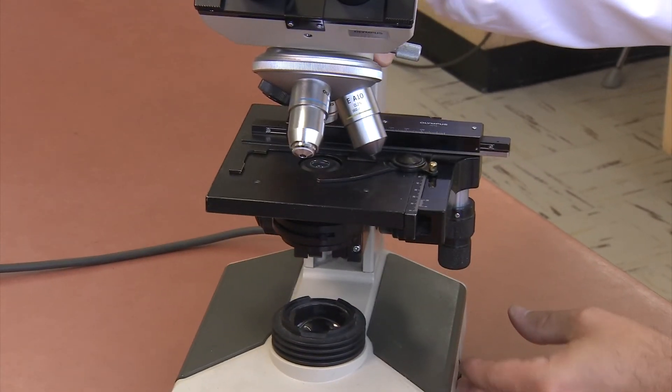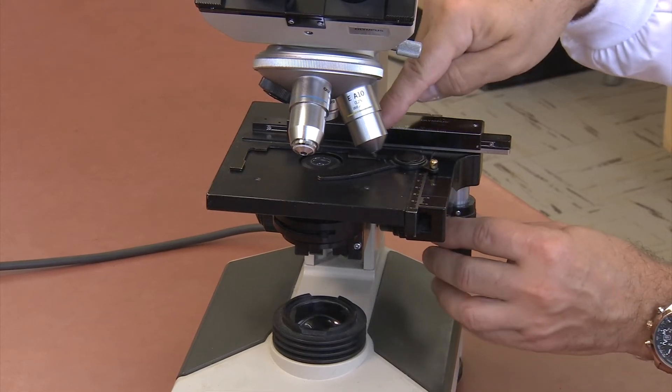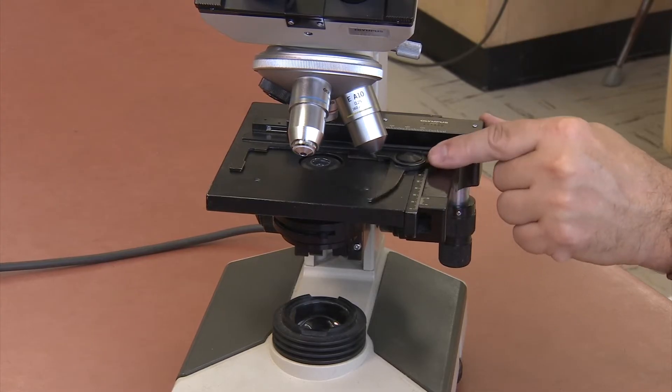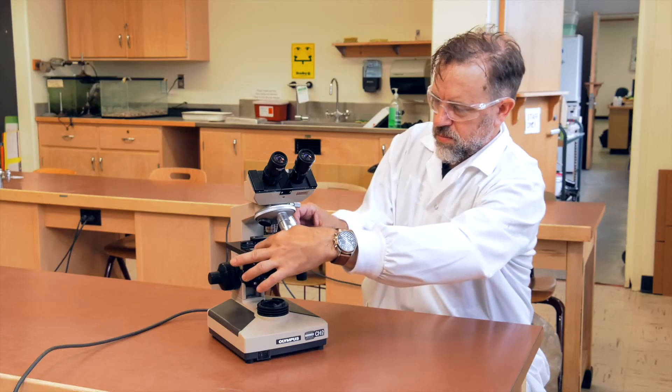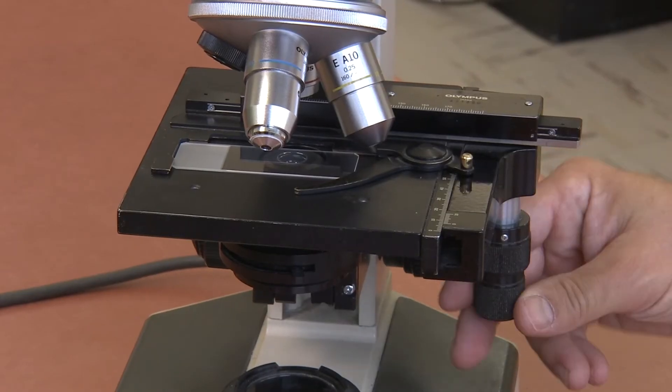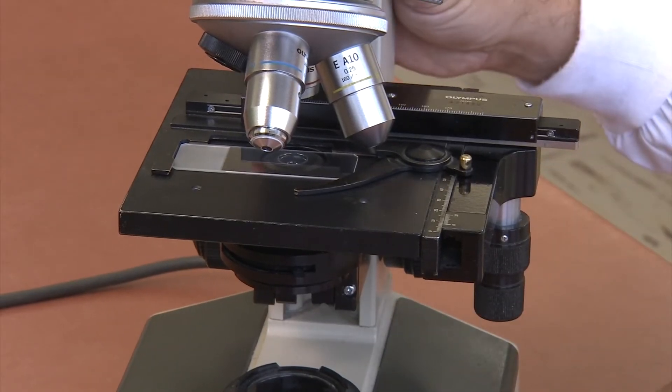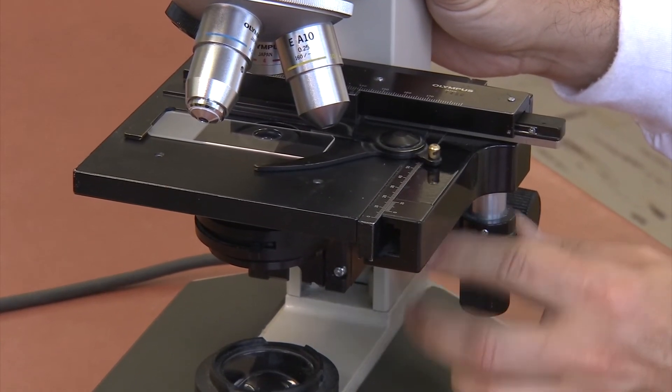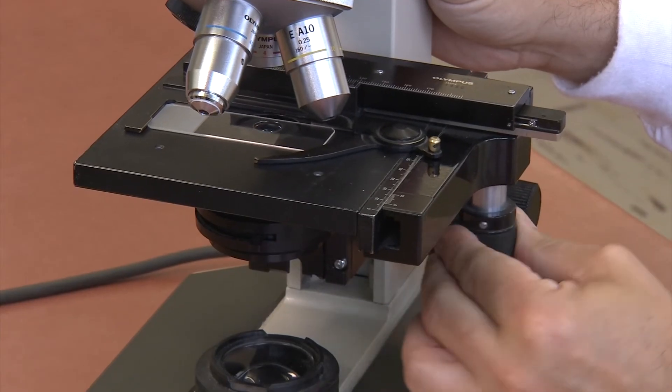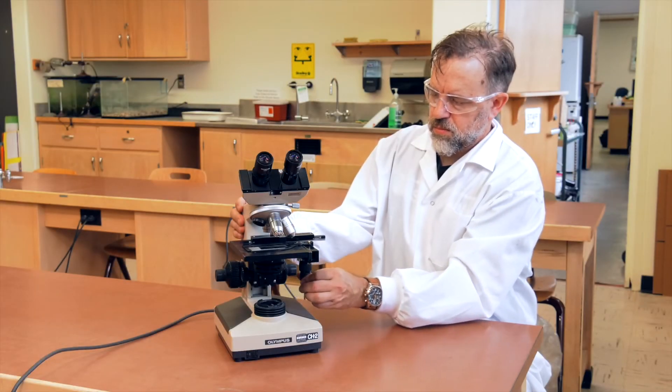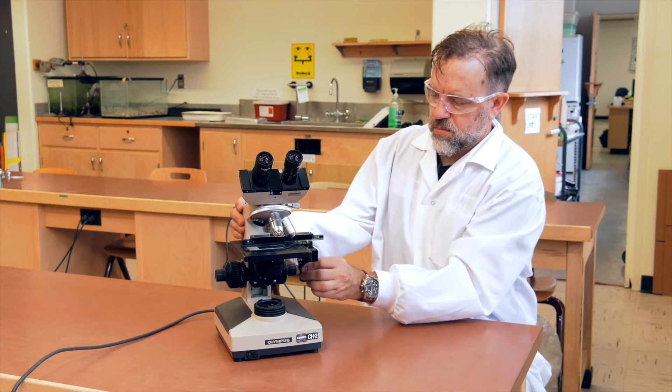Below the objective lenses is the mechanical stage. This is where your slides will be placed and secured by the spring-loaded slide holder. The slide holder is controlled by the mechanical stage controls, which are the small knobs attached directly to the right side of the stage. These controls will allow you to move the slide forward, back, and side to side.